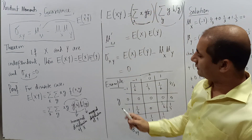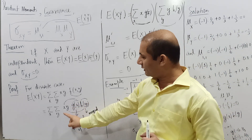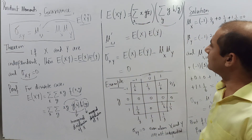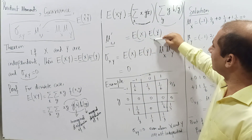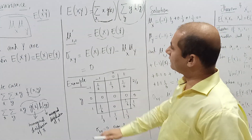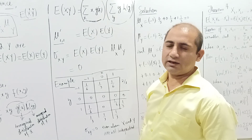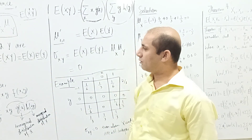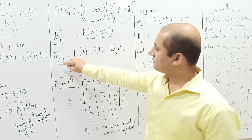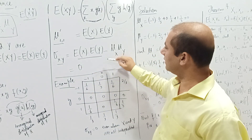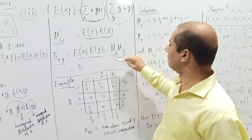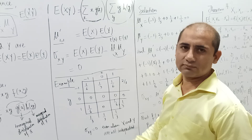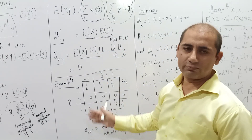Since X and G(x) are independent of Y, and Y and H(y) are independent of X, we can factor the double summation into a product of two separate summations. The first summation is E[X] and the second is E[Y], confirming that mu_11_dash equals E[X]·E[Y] when X and Y are independent. Subtracting mu_X·mu_Y gives covariance equal to zero.